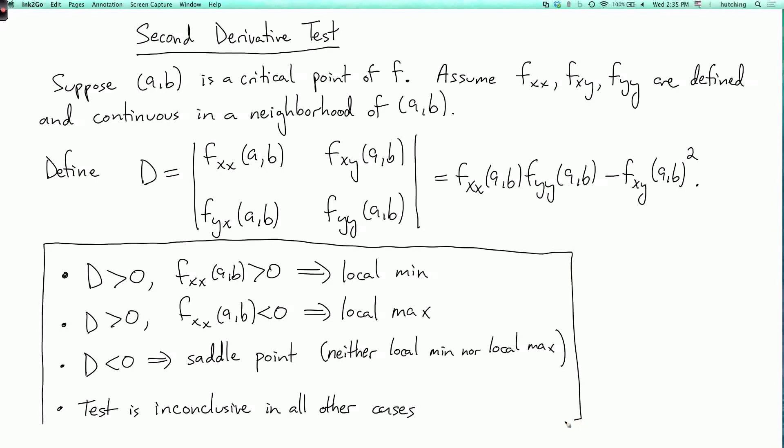So there it is. Now what's going on here? What is this mysterious number D? And why does the test look like this? Well here's a remark for those of you who have seen linear algebra before. And if you haven't seen linear algebra, then just ignore this. So what we're doing is we're looking at the eigenvalues of the matrix of second partial derivatives.